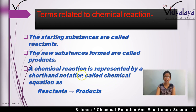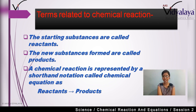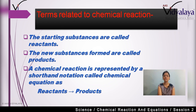The chemical reaction is represented by a shorthand notation called a chemical equation. Chemical reactions are represented through shorthand notation, and that is called a chemical equation — for example, reactants give products. The starting substances are reactants, and the formed substances are products. So what is a chemical equation? It is the shorthand notation for a chemical reaction.